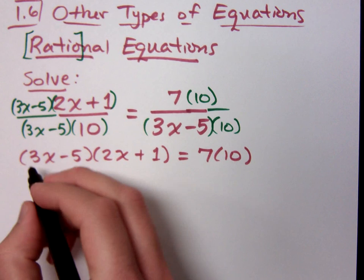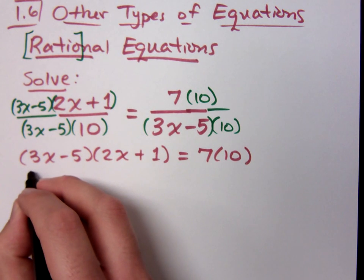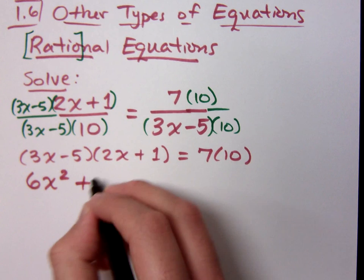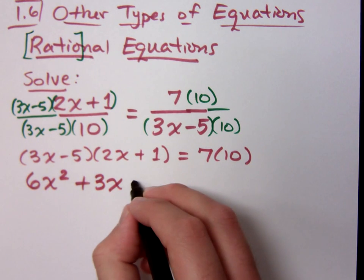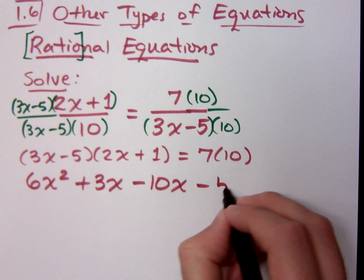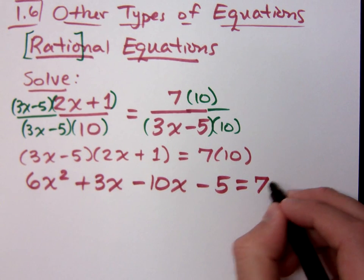Let's foil this. So when I foil, what do I have? 6x squared plus 3x. Inside is a minus 10x. And the last term is minus 5. And on the other side of the equation, we have 70. Do you all agree?